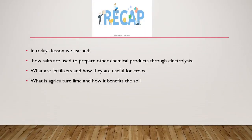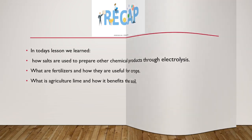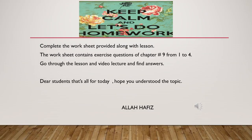In today's lesson we learned: how salts are used to prepare other chemical products through electrolysis, what are fertilizers and how they are useful for crops, and what is agricultural lime and how it benefits the soil. The worksheet contains exercise questions of Chapter 9 from 1 to 4. Go through the lesson and video lecture and find answers. Dear students, that's all for today. Hope you understood the topic.